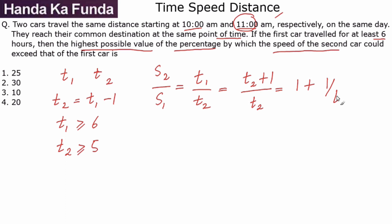Now how much is this value? I don't know what this value is, but I know that t₂ is greater than 5, which will mean 1 by t₂ is less than or equal to 1 by 5, or less than or equal to 0.2, because 1 by 5 is 0.2.